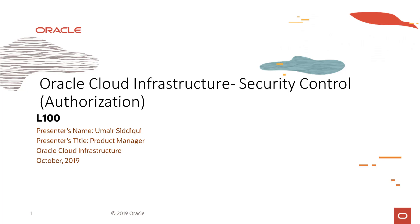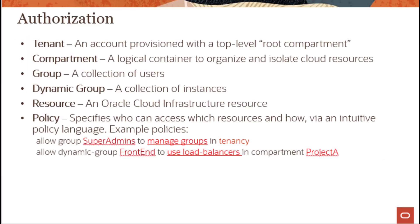We looked at security controls in terms of authentication. Now let's look at security controls from an authorization perspective. Authorization is controlled through IAM, and some of the key IAM primitives are resources.